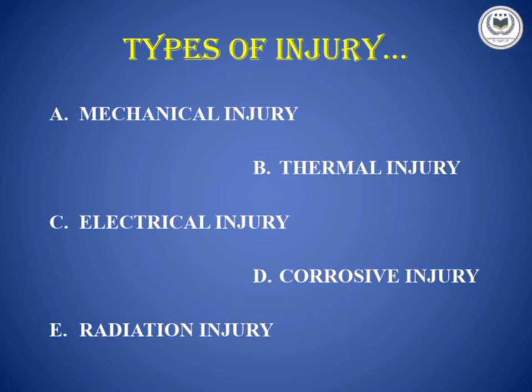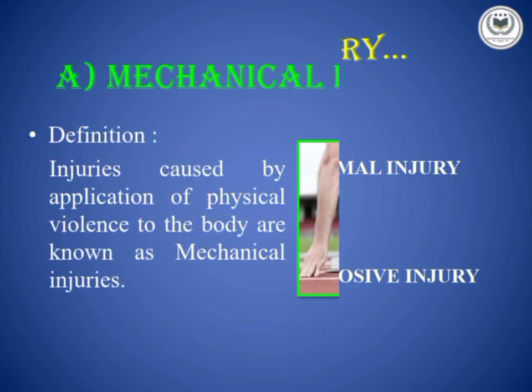Now we will see about the types of injury. The types of injury are mechanical injury, thermal injury, electrical injury, corrosive injury, and radiation injury. In this part one, we will learn about mechanical and thermal injury.